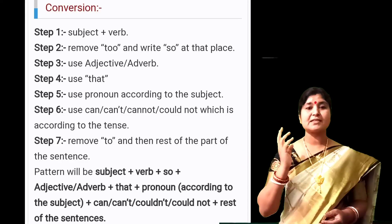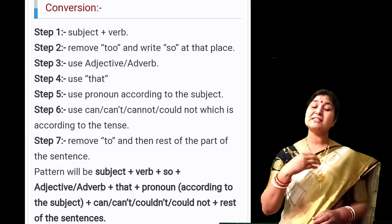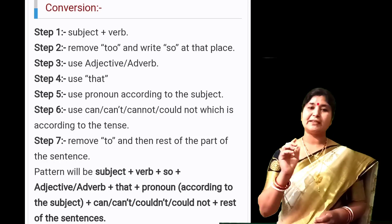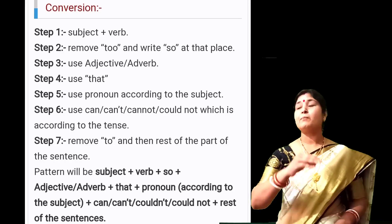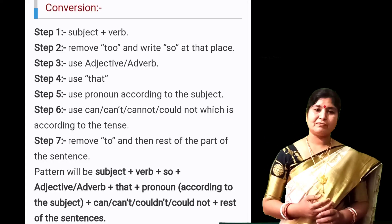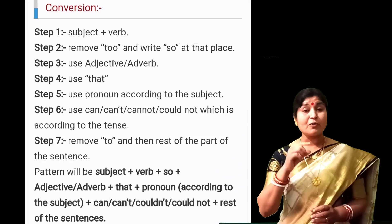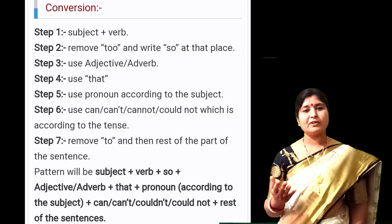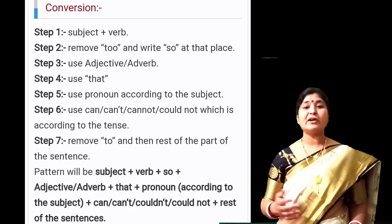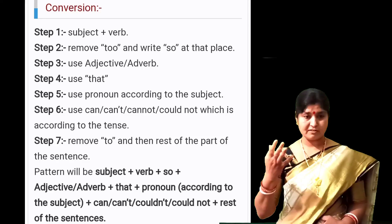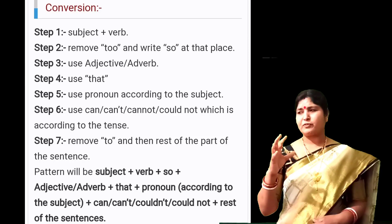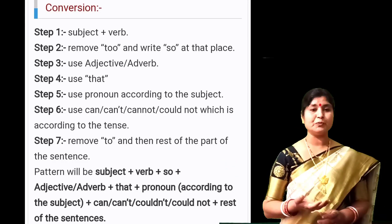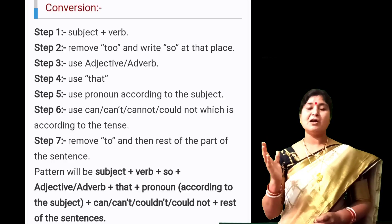Step one: subject plus verb. Step two: remove 'too' and write 'so' in that place. Step three: use adjective or adverb. Step four: use 'that'. Step five: use pronoun according to the subject. Step six: use can, cannot, or could not according to the tense. Step seven: remove 'to' and then the rest of the sentence.